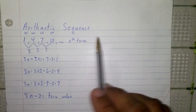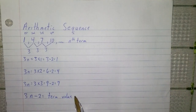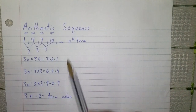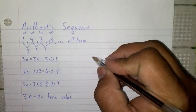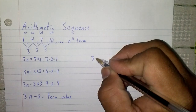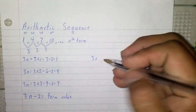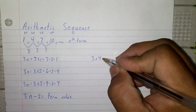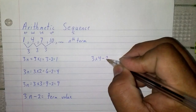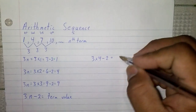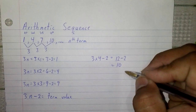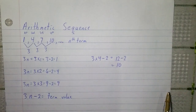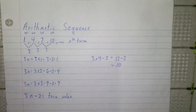So this is an arithmetic sequence. Now we can prove it. Let's try n equals 4, which is the fourth position — the number 10. Remember, n is simply the position. So: 3 times 4 minus 2 equals 12 minus 2, which equals 10. That is correct.